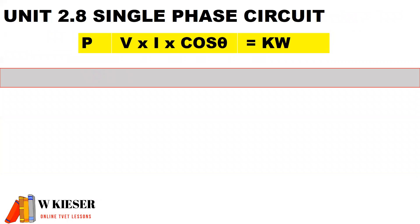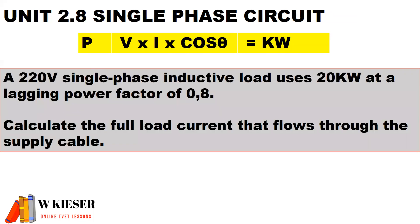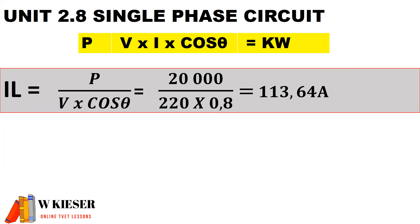Moving on to single-phase circuits: to calculate power, it's V × I × cos θ, and the units are kilowatts. A 220-volt single-phase inductive load uses 20 kilowatts at a lagging power factor of 0.8. Calculate the full load current that flows through the supply cable. The load current is the power divided by the voltage and the power factor: 20,000 watts ÷ (220 × 0.8). Therefore, the load current is 113.64 amps.